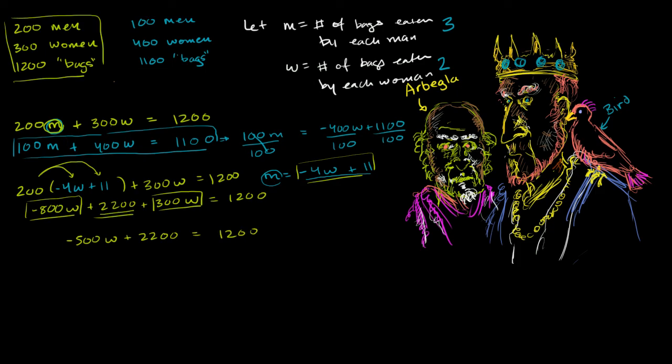Now to solve for w, we'd want to subtract 2200 from both sides. So subtract 2200. On the left-hand side, you're left just with the negative 500w. And on the right-hand side, you are left with negative 1,000.